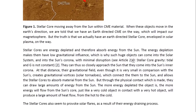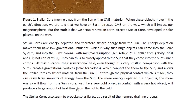You may look at article 210 entitled Stellar Core Gravity, Tidal, and G is not constant. They can thus so closely approach the sun that they come into the sun's inner corona. At that distance, their gravitational field, even though it is very small in comparison with the sun's, creates gravitational vortices or solar tornadoes, which connect them to the sun and allow the stellar cores to absorb material from the sun.